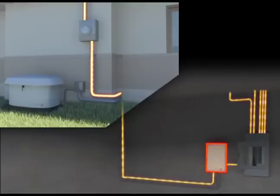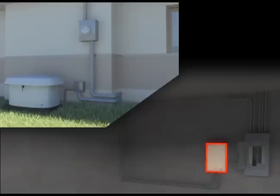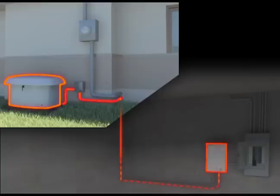When utility power fails or drops below an acceptable level, the transfer switch senses a lack of power and automatically starts the generator. Within 10 seconds, the transfer switch automatically disconnects utility power and connects to the auxiliary power provided by the generator.